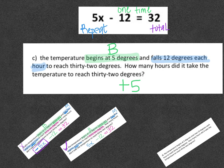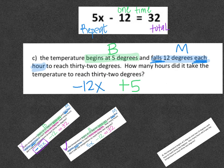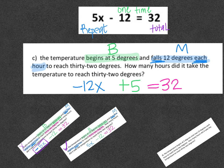That's going to tell me it said each hour and it said falls. That's going to be the M. But because it says falls 12, that means negative 12x each hour. And then again, the same thing, it equals 32 as the previous ones.